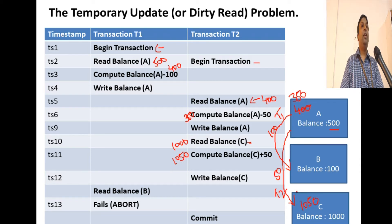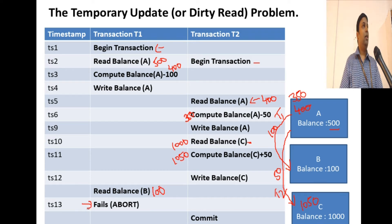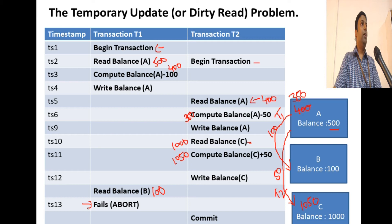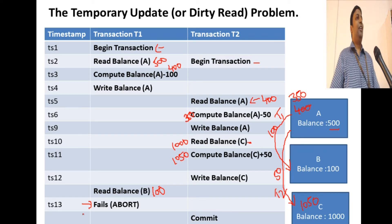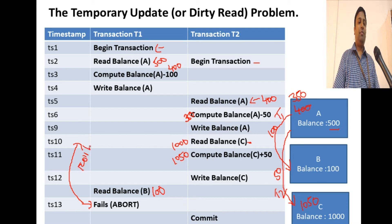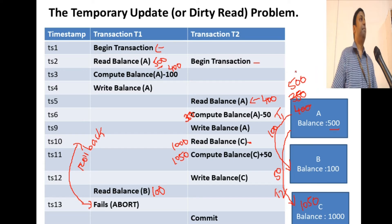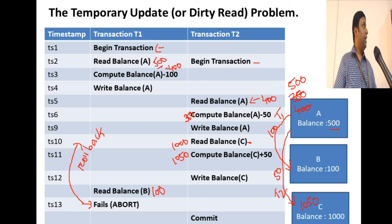T2 has transferred 50 rupees. T1 still needs to add 100 rupees to account B, so it reads balance of B = 100, and then it fails. Failure can happen due to a network issue between your database and web server, or a crash of the database instance itself. Once a failure happens, we must roll back whatever changes were made. So T1 rolls back balance of A from 400 back to 500.